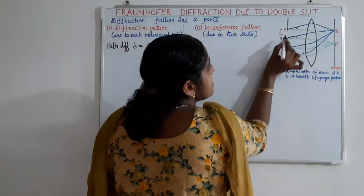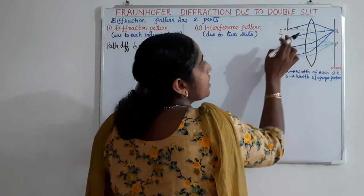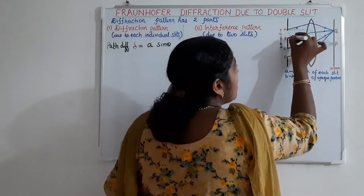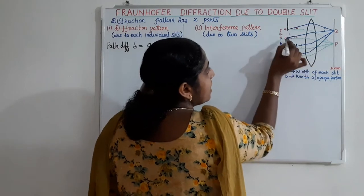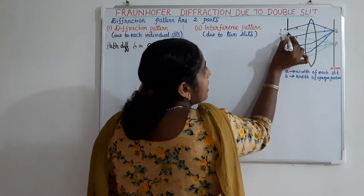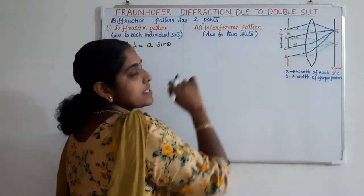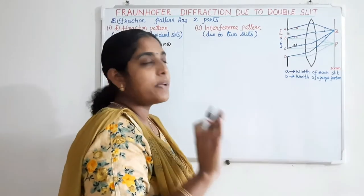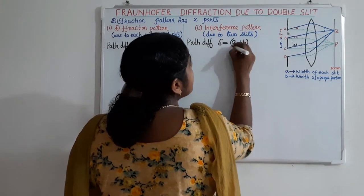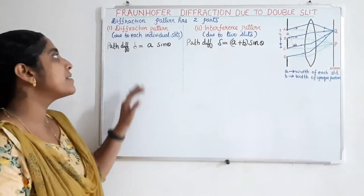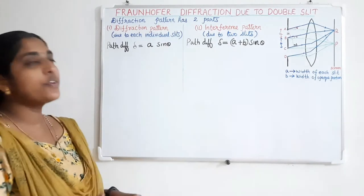For the interference pattern due to the two slits, we consider the top point of the first slit and the top point of the second slit. Drawing a normal, Cn will be the path difference. Considering triangle ACn, sin theta equals Cn divided by AC, which is A plus B. So the path difference is delta equals (A + B) sin theta.